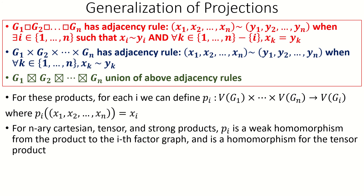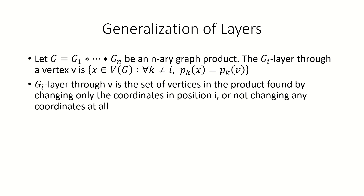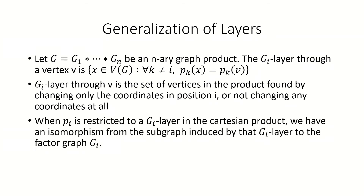We can also define layers for these general products. The g sub i layer through a vertex v is what we get by letting the coordinates vary from v in only the i-th coordinate, or not vary at all. Again, when we restrict the projection function p sub i to a g sub i layer in the Cartesian product, we get an isomorphism from that g sub i layer to the factor graph g sub i.